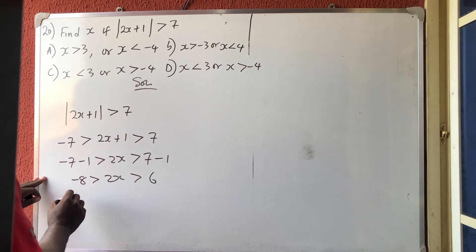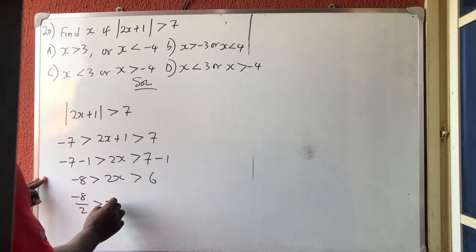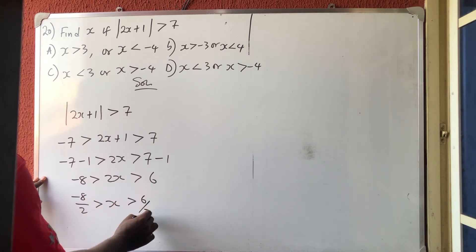So divide everybody by 2. I'm going to have minus 8 over 2 is greater than x, which is greater than 6 over 2.